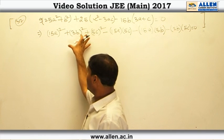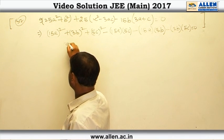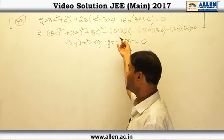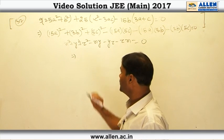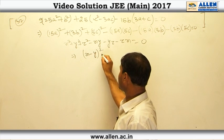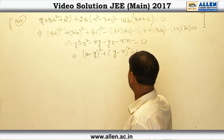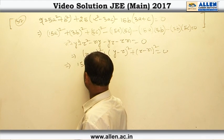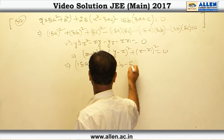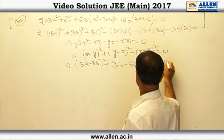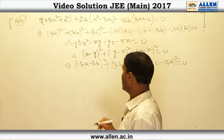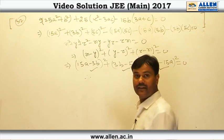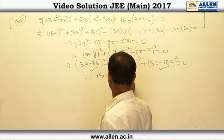This expression matches the identity X squared plus Y squared plus Z squared minus XY minus YZ minus ZX equal 0. Multiplying throughout by 2, this becomes (X minus Y) squared plus (Y minus Z) squared plus (Z minus X) squared equal 0. So our relation reads (15A minus 3B) squared plus (3B minus 5C) squared plus (5C minus 15A) squared equal 0. Since A, B, C are real numbers, each perfect square must be zero, giving 15A equal 3B equal 5C.